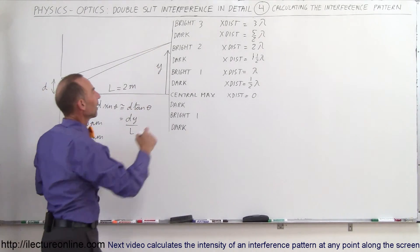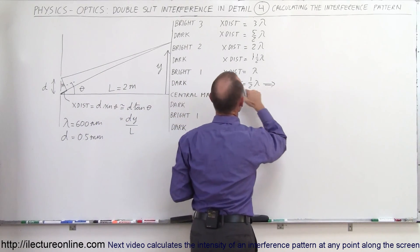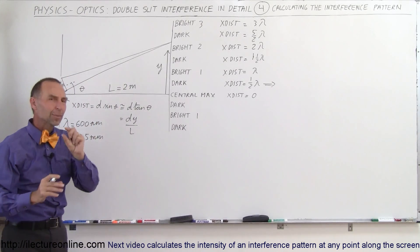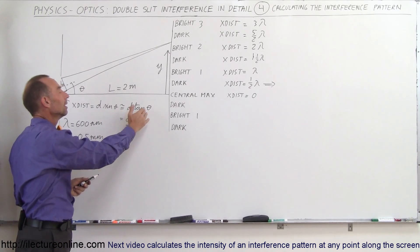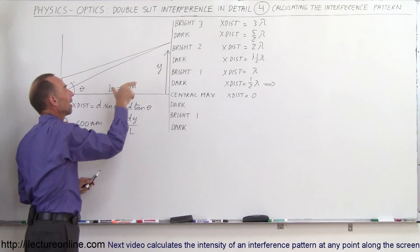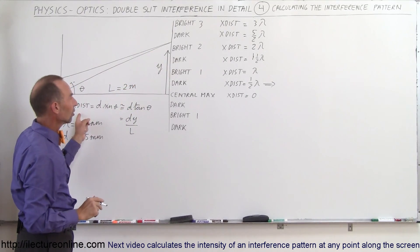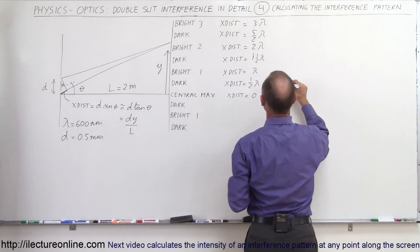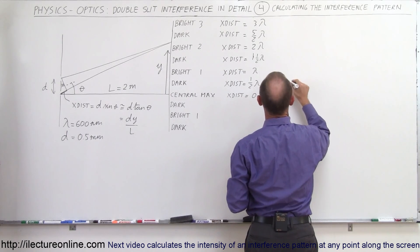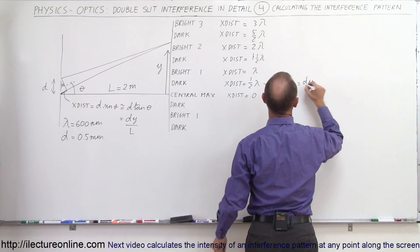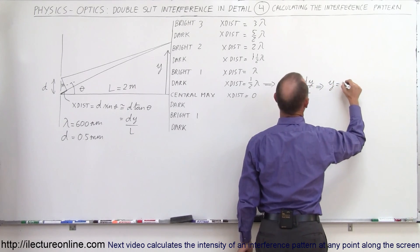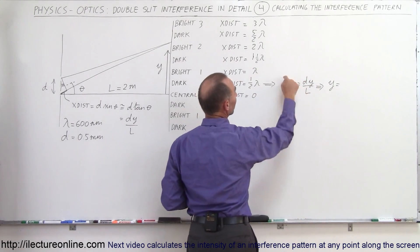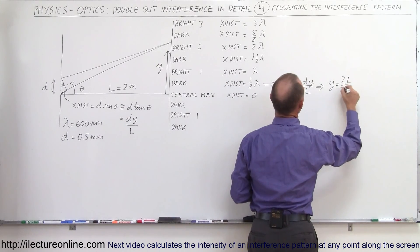First, we're going to find the first dark spot. The extra distance traveled equals half a wavelength. We also note that the extra distance traveled is always d·sin(θ). Because the angles are really small, that's approximately equal to d·tan(θ). And tan(θ) equals the opposite side y divided by the adjacent side L. So we set the extra distance in terms of wavelengths equal to dy over L.